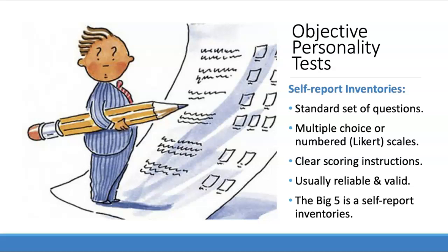One advantage of this style of questions is that they're very easily scored. Each response typically has a number associated with it, so there are clear scoring instructions, which helps increase inter-rater reliability. If two different people score it, they should score it the same way due to standardized instructions. Self-report inventories developed by psychologists tend to be more valid than other approaches. One example is the Big Five, which you have done or will do for homework.